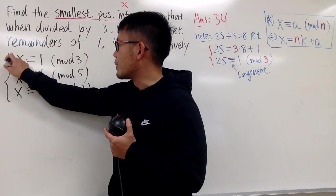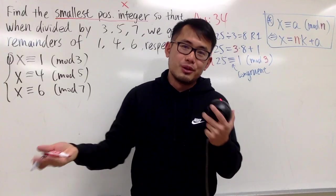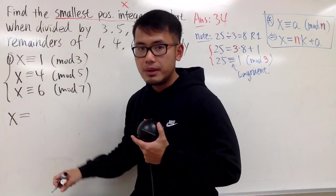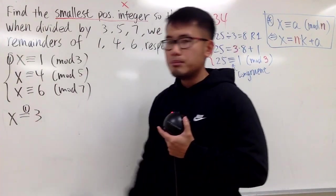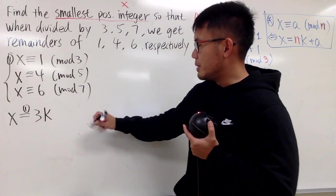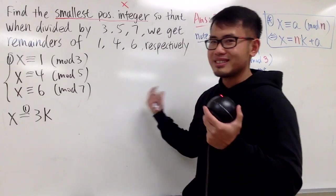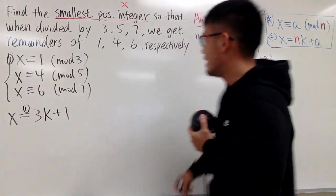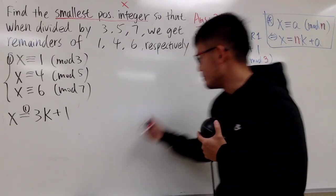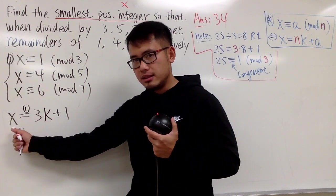Let's look at the first congruence: x ≡ 1 (mod 3). I'll convert this to an equation. From the first condition, x = 3k + 1 for some integer k. This is the substitution strategy, just like in a regular system of equations.